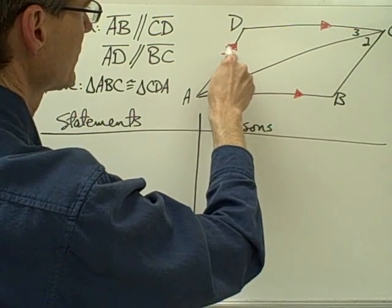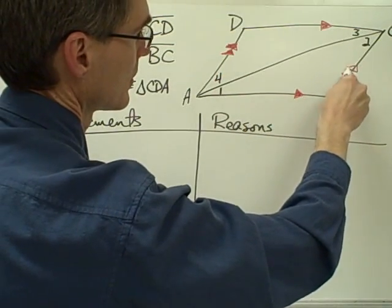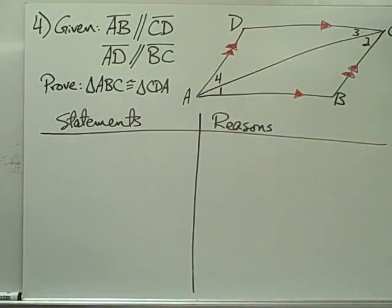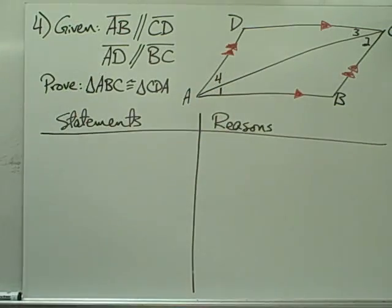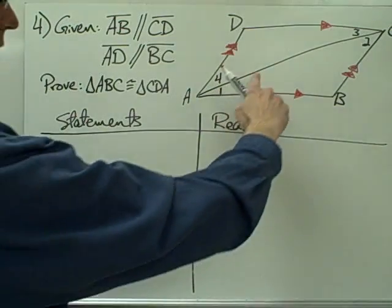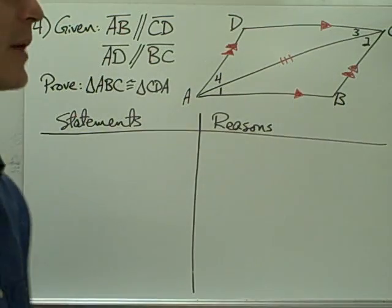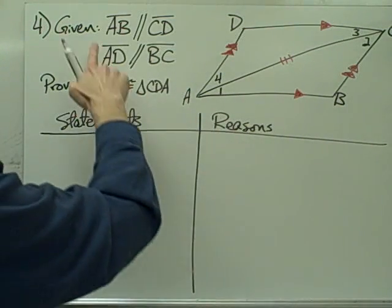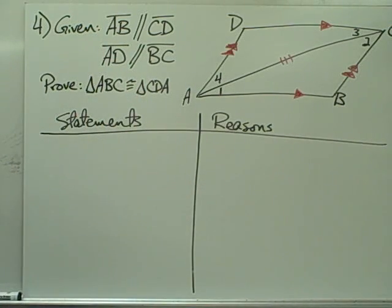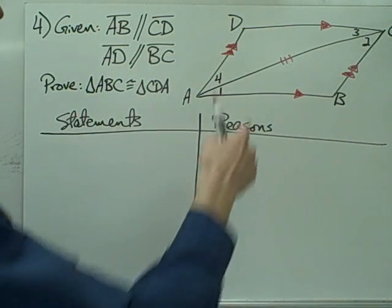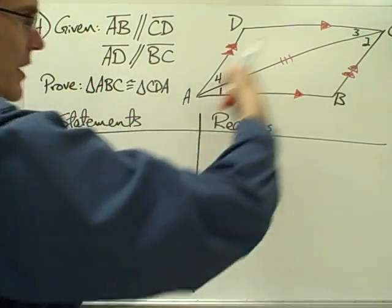I'll put double arrows on those parallel segments. Right away I can see that segment AC is congruent to itself by the reflexive property. I don't have any other information except for this parallel information, so I'm guessing I'm going to need to use something I know about parallel lines and a transversal.